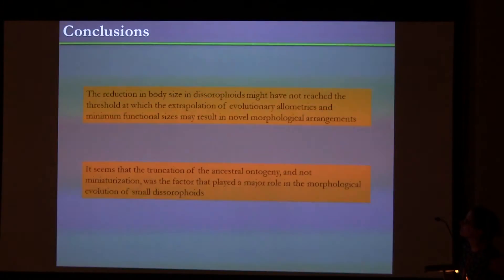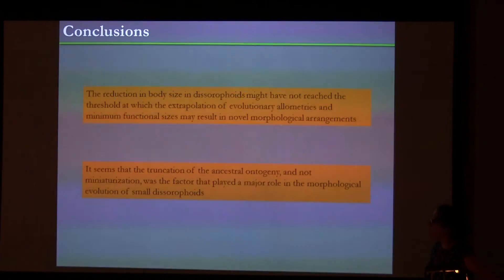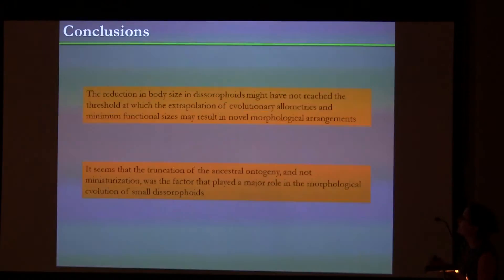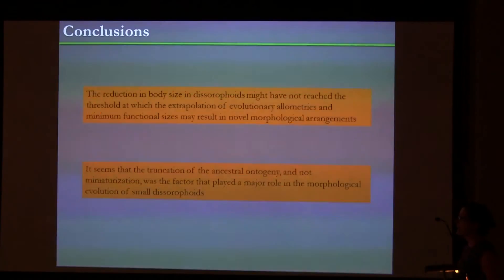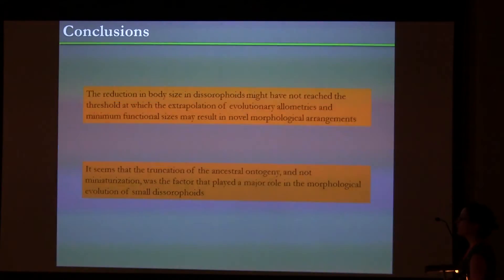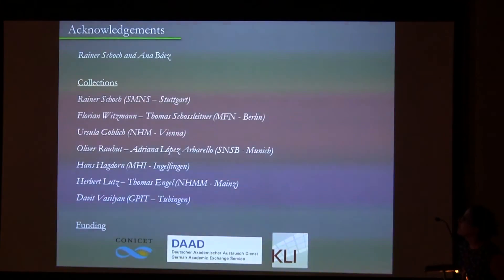As a conclusion: first, the reduction in body size in disorophoids may not have reached the threshold at which the extrapolation of evolutionary allometries and minimum functional sizes results in novel morphological arrangements. And finally, it seems that truncation of the ancestral ontogeny — not miniaturization — was the factor that played a major role in the morphological evolution of small disorophoids.